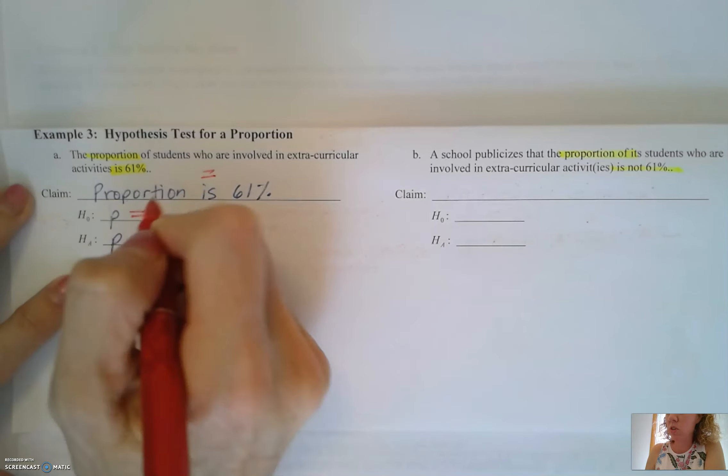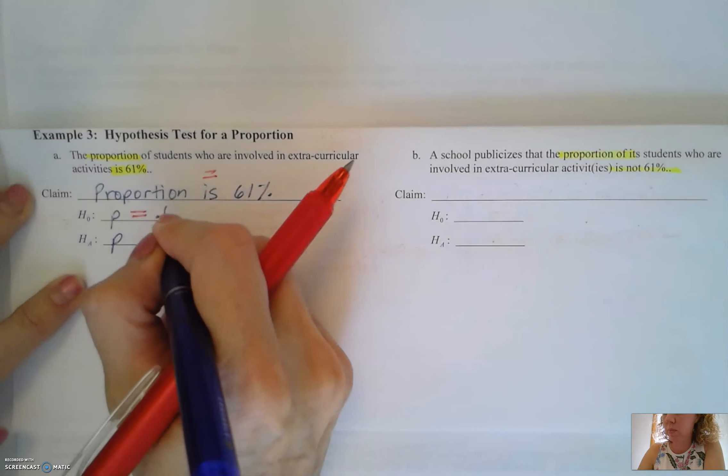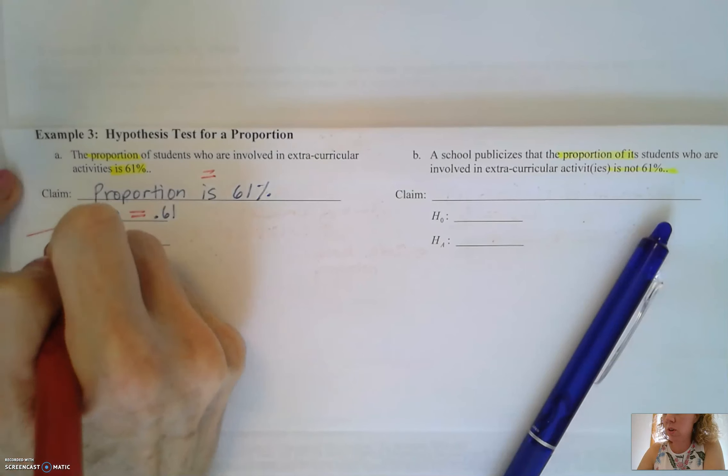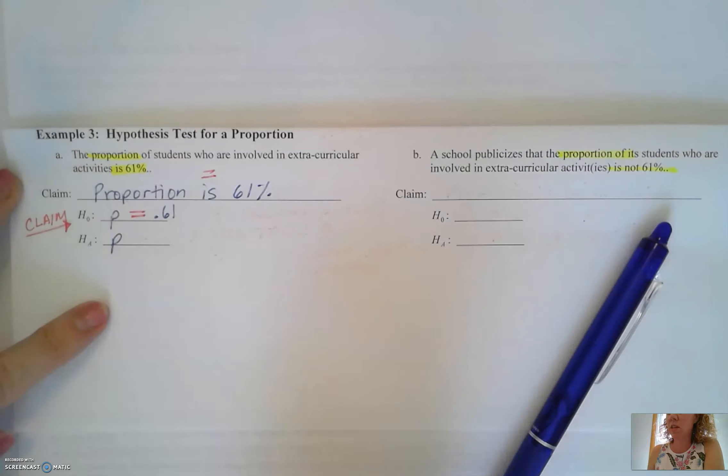So it's going to be P equals our population parameter is 61% or 0.61. Remember our claim is going to go with our null hypothesis since it contains equality.